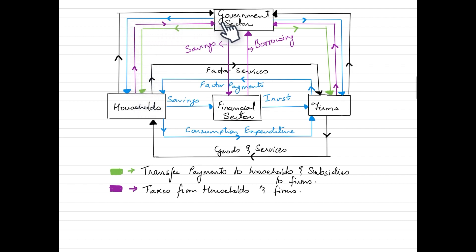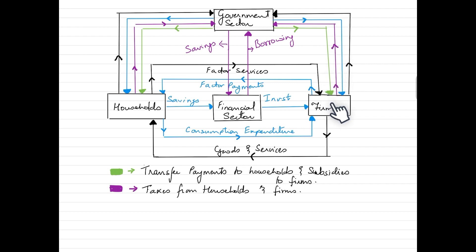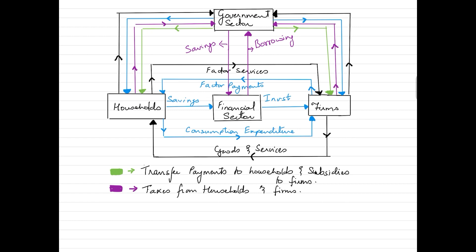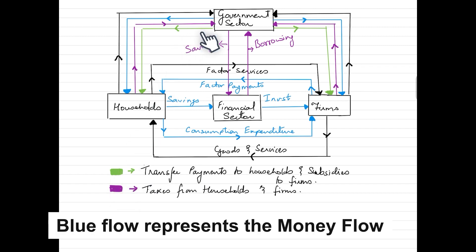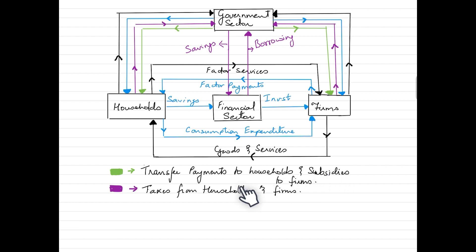The purple flow in the diagram represents taxes collected by the government from both households and firms, which is a major source of government income used to finance all expenditures. The government also makes transfer payments to households — shown by the green flow — in the form of pensions, social security, and healthcare, and provides subsidies to firms. Additionally, the government saves funds with the financial sector and borrows from it when running a budget deficit.